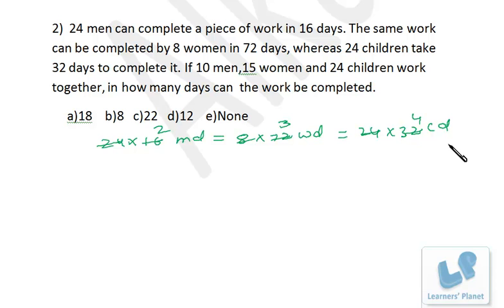Right, now what is the simplest method to solve the problem? What you do: you convert men and women to children. Now our work is of 24 into 32 children-days, right? 10 men: 2 men are equal to 4 children, that means 10 men are equal to 20 children.